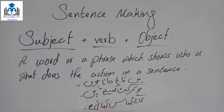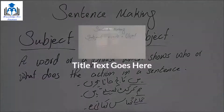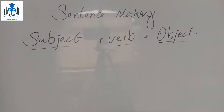'گائے گھاس کھاتی ہے' (The cow eats grass). Who does this action? The cow does it — who eats the grass? The cow eats it. So 'گائے' (cow) is the subject here. Simply put: the one who performs the action in a sentence is called the subject.